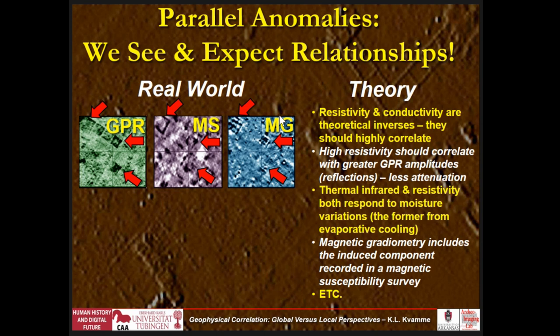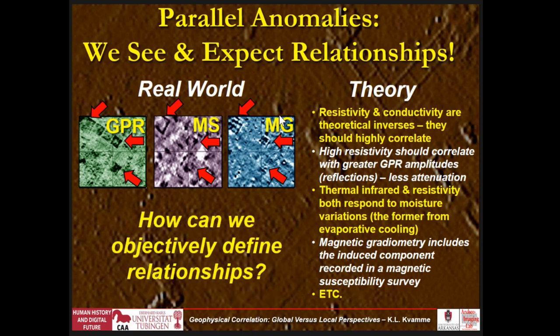In the real world we could see relationships, and then theoretically resistivity and conductivity are the theoretical inverses of each other. High resistivity should correlate with greater GPR amplitudes because of the lower conductivity. Thermal infrared and resistivity are often said to be parallel data sets. Magnetic radiometry includes induced components that a magnetic susceptibility meter might pick up. So there are lots of reasons why we should have relationships between various geophysical data sets.